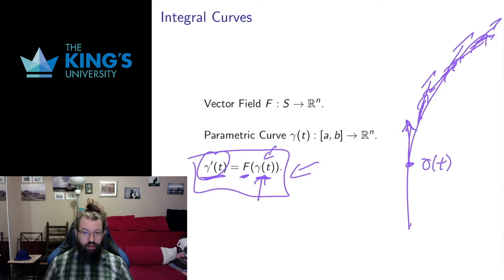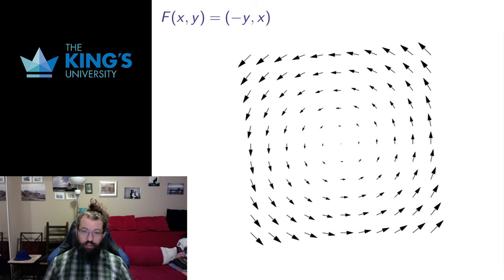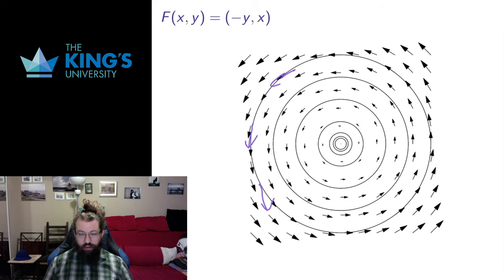I'll talk more about this equation later when we discuss trying to solve for integral curves, which is quite a hard problem. Here's a vector field in R2: F(x,y) = (-y, x). This gives us something that looks like counterclockwise rotation. The integral curves are indeed exactly circles going counterclockwise. At each point on the circle the tangent to the circle is the same as the vector field, and these tangents are larger further out and smaller further in.